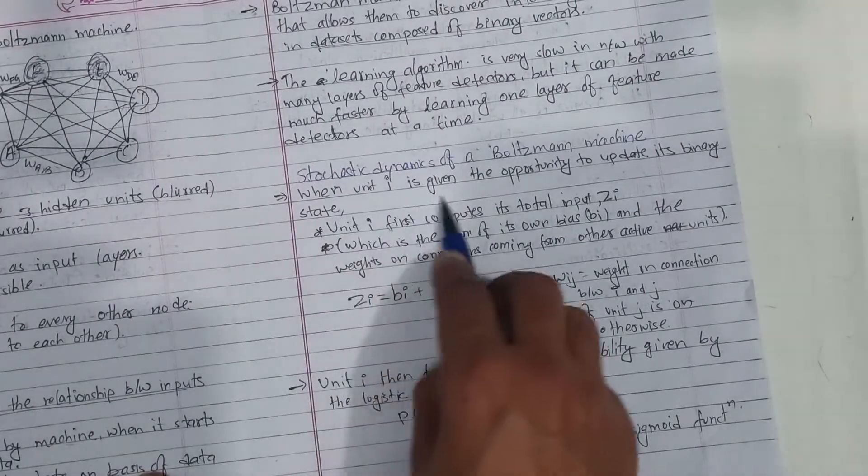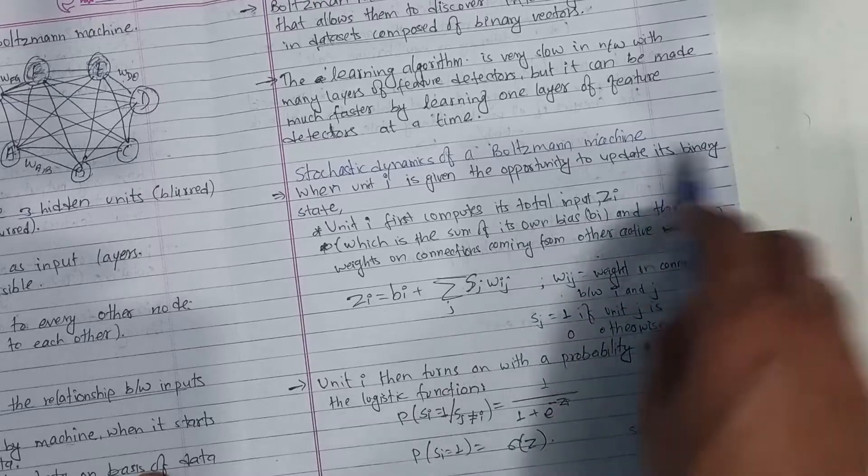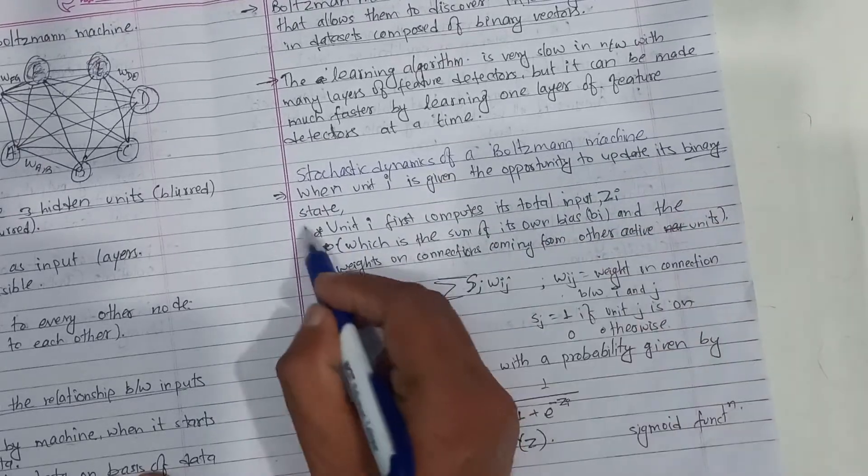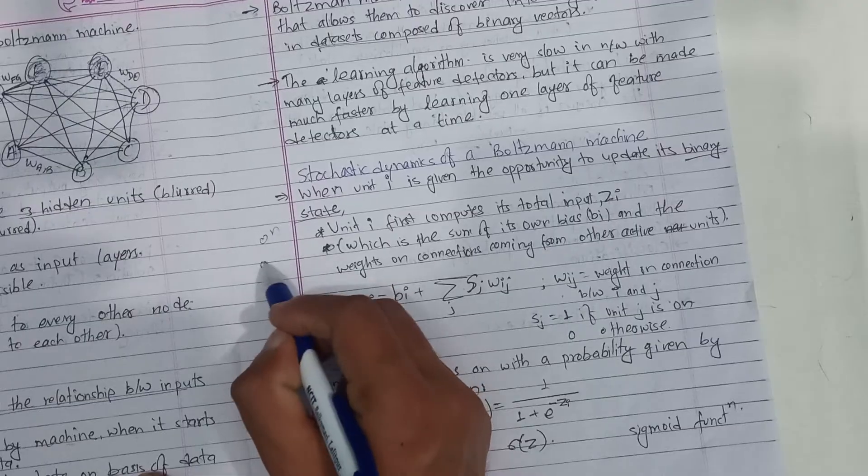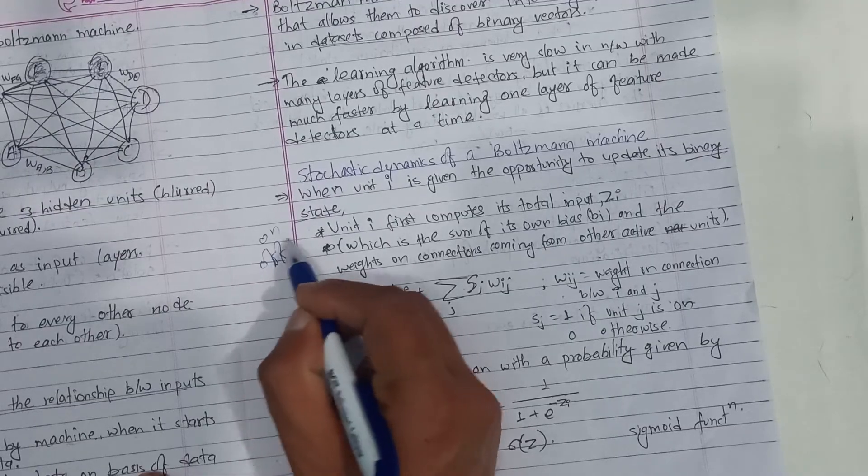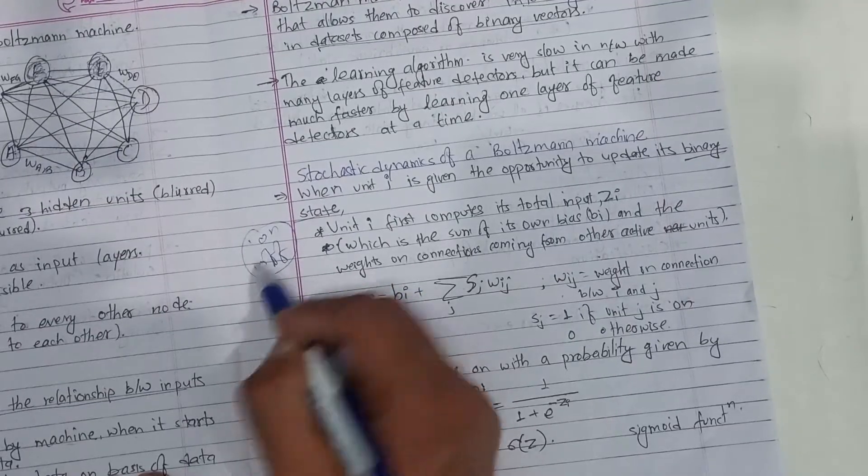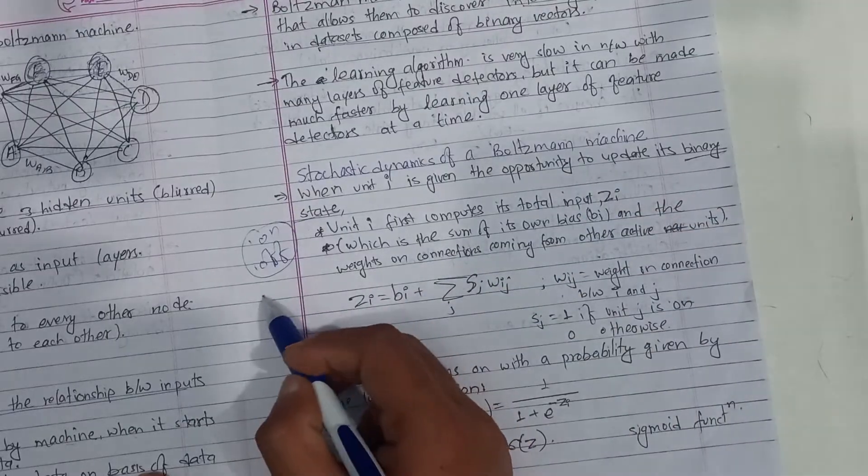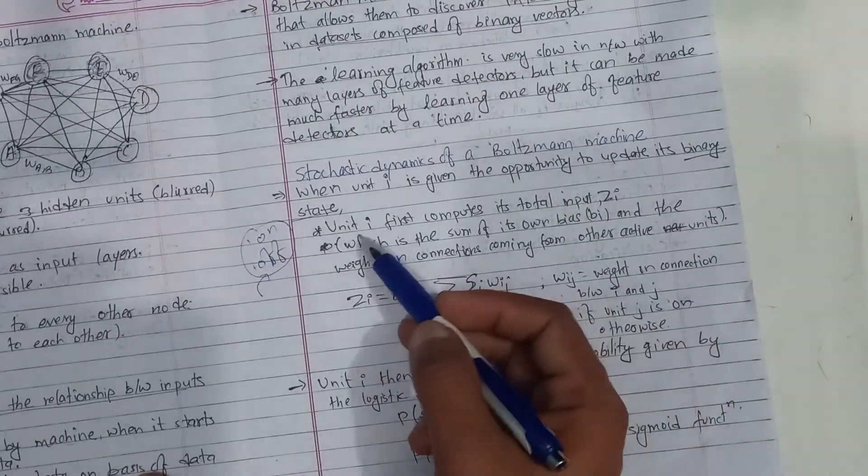So when unit i is given the opportunity to update its binary state, binary state. Each neuron is a neuron. If you have this, the zone state, it will be able to update the opportunity.